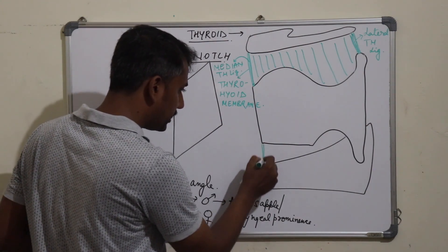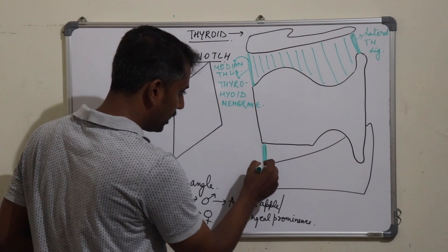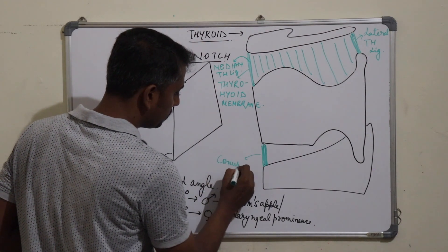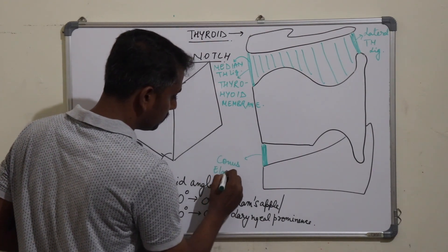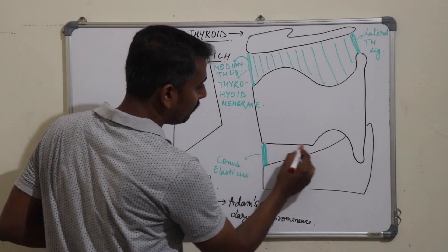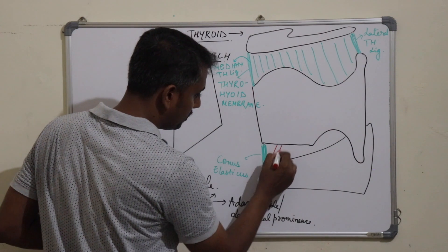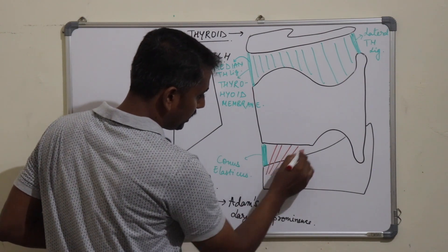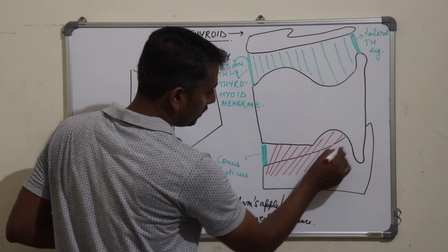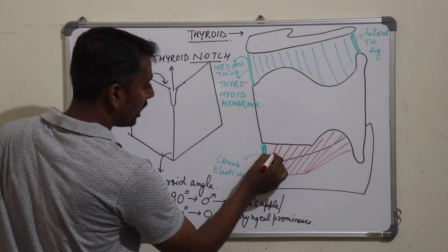In the median plane, the lower border of the thyroid cartilage is attached to the arch of the cricoid cartilage by a ligament known as the conus elasticus. The rest of the lower border gives attachment to a muscle extending to the cricoid cartilage, known as the cricothyroid muscle.